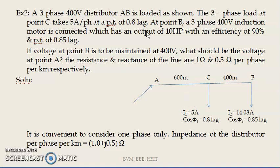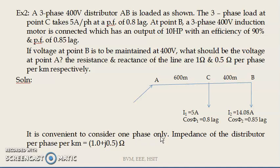The distributor AB is loaded at point C with load current 5 amps and power factor 0.8 lagging. At point B, a 400 volt induction motor is connected with an output of 10 HP, efficiency of 90%, and power factor of 0.85 lagging. The distributor resistance and reactance are 1 ohm and 0.5 ohm per phase per kilometer respectively. It is convenient to consider one phase only, and then convert into three phase later.